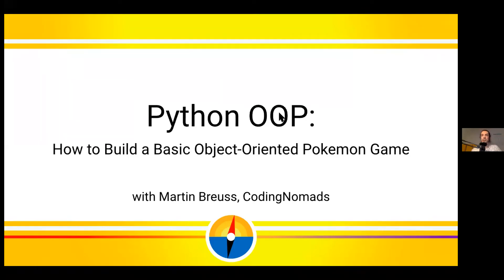All right, let's get this on the road. Welcome everyone — welcome back for those who were there yesterday or both days, and hello to everyone joining new today. Today on this stream I'm going to talk about object-oriented programming with Python. I'm going to do this in a very practical approach, by building out a little Pokémon-type game. You'll be able to let two different instances of Pokémon battle against each other and feed them — that's what we're going to build.